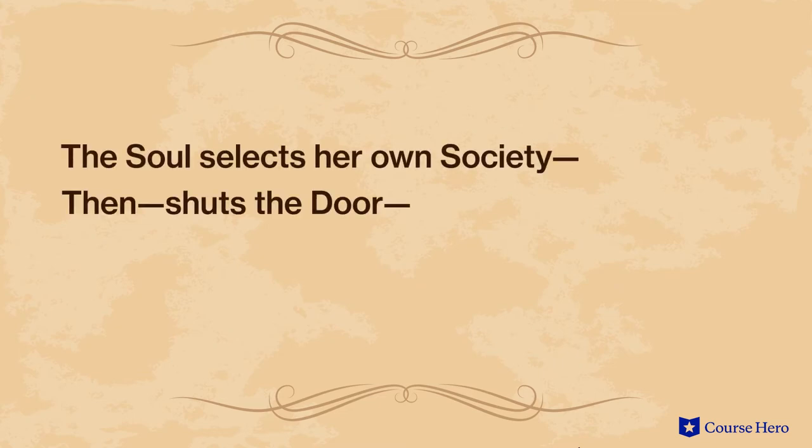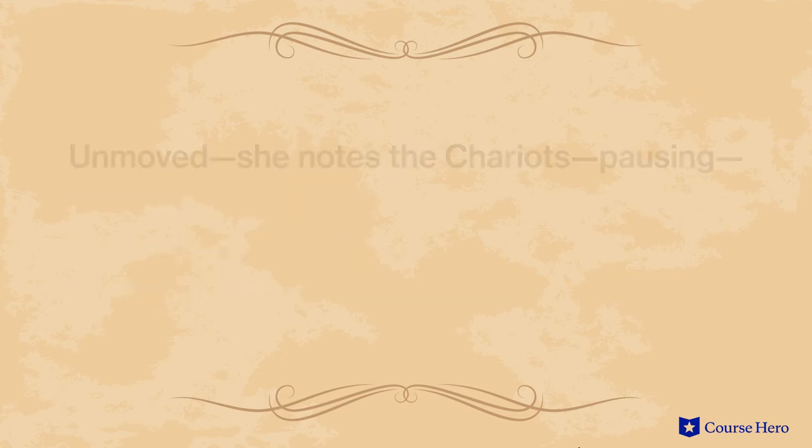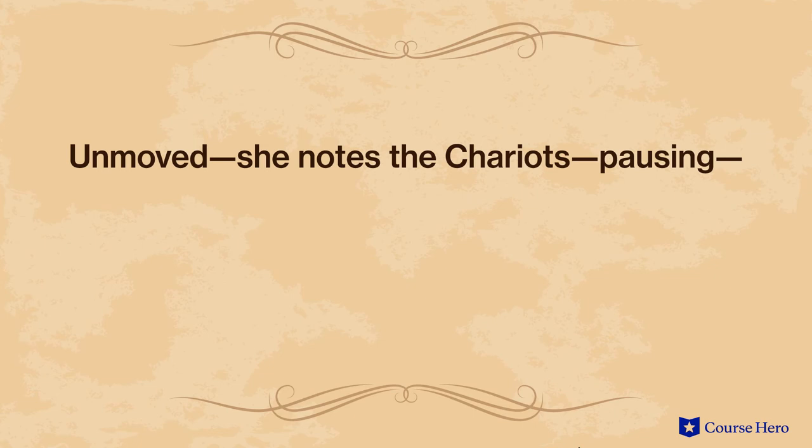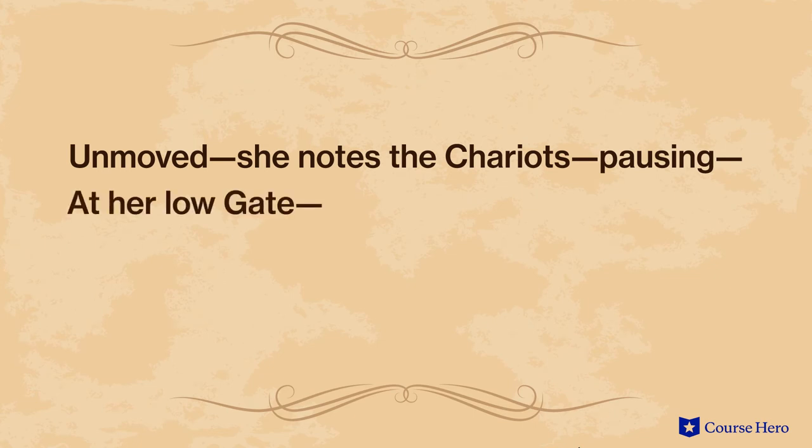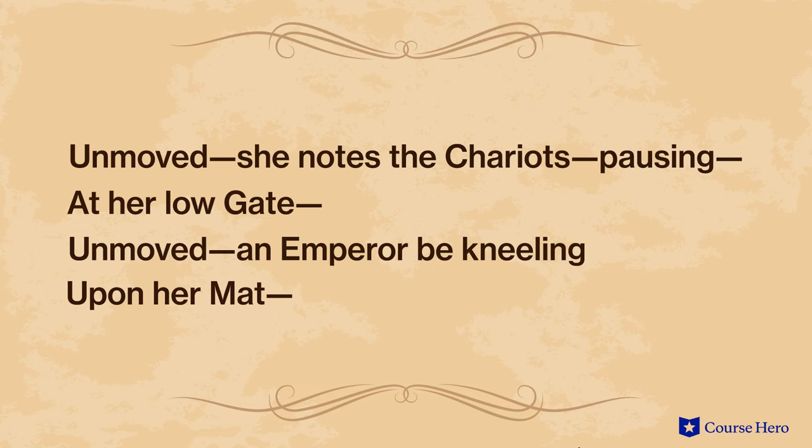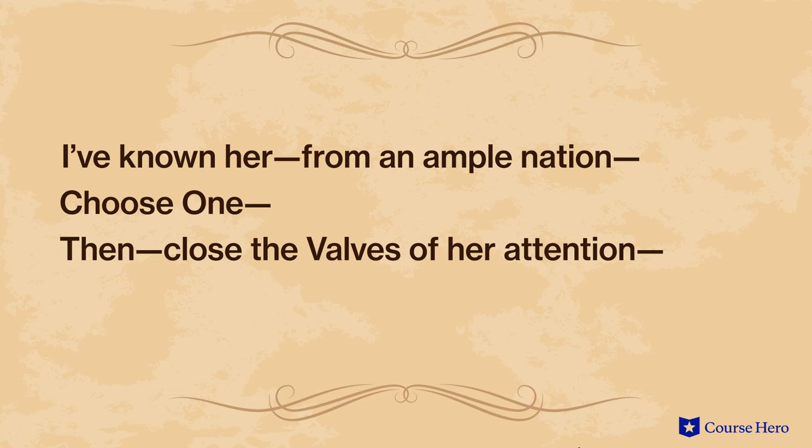This is the entire poem. The soul selects her own society, then shuts the door to her divine majority, present no more. Unmoved, she notes the chariots, pausing at her low gate, unmoved, an emperor be kneeling upon her mat. I've known her from an ample nation choose one, then close the valves of her attention like stone.